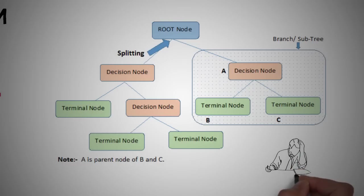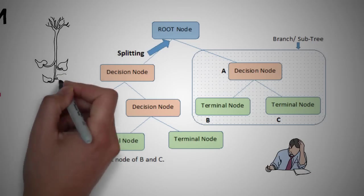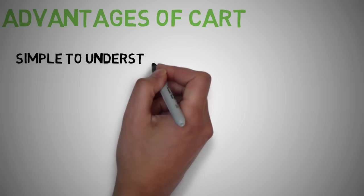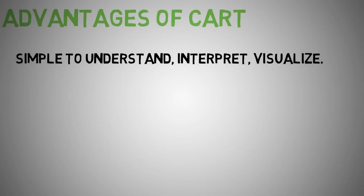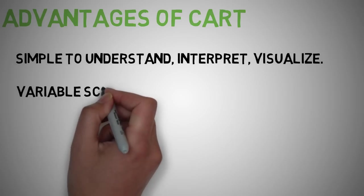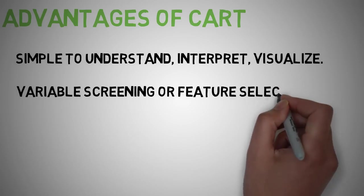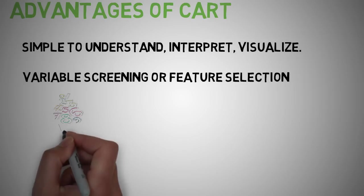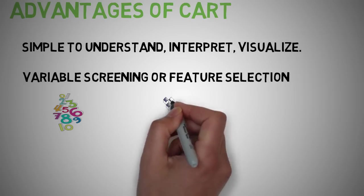The advantages of CART: it is simple to understand, interpret, and visualize. Decision trees implicitly perform variable screening or feature selection. It can handle both numerical as well as categorical data.